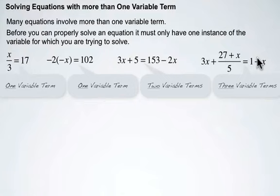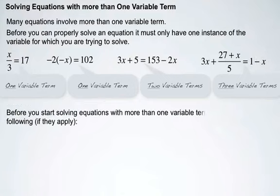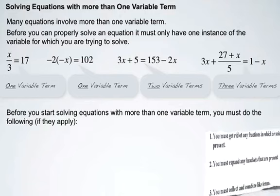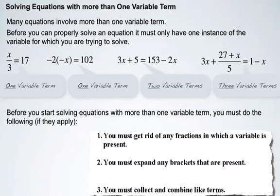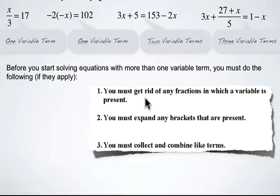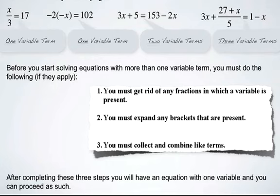There are three terms which contain an x. So before we start solving, we're going to do the following. One, you must get rid of any fractions in which a variable is present. Two, you must expand any brackets that are present. And three, you must collect and combine like terms. After completing these three steps, then you will have an equation with one variable term, and you can proceed as such to solve.